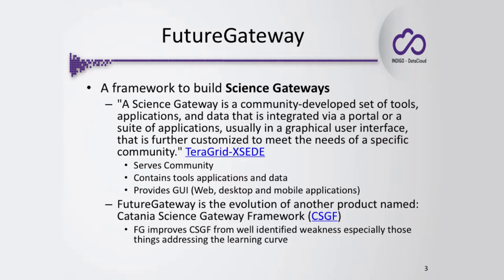From this definition we can see some highlighted words: the science gateway is meant to serve a community, it talks about applications, tools, and cooperative means, and of course provides a graphical user interface to serve that community. The Future Gateway itself is not a really new product — it is an evolution of an existing framework called the Catania Science Gateway Framework. The most important target that Future Gateway is trying to reach is to improve the weaknesses identified from that earlier system.